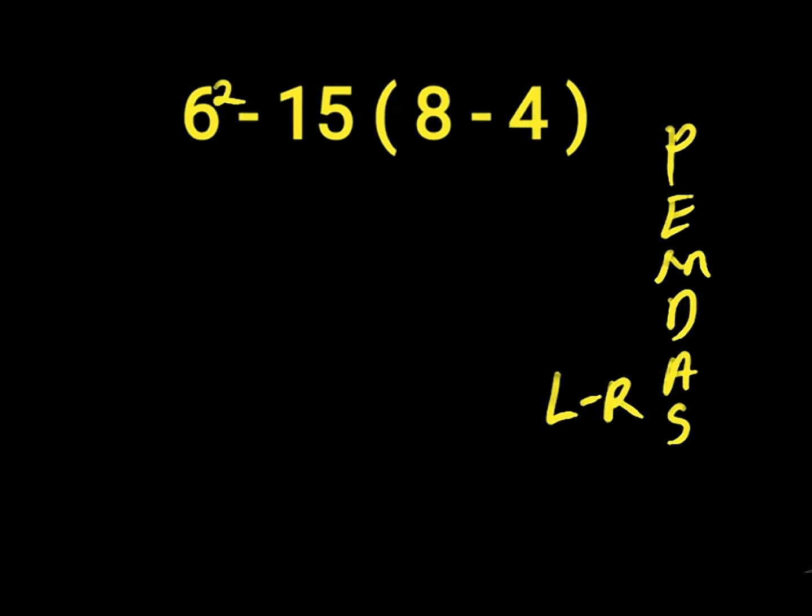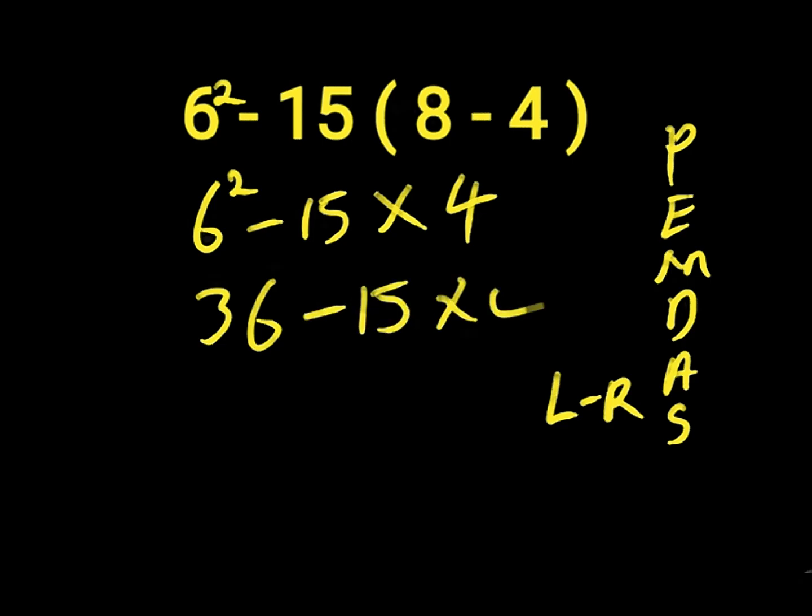First of all, we solve our parentheses, which is 8 minus 4. 8 minus 4 will give us 4. Then we bring down 6 to the power of 2 minus 15 times 4. Remember, if a number is close to a parentheses, there's a multiplication sign in between. 6 to the power of 2 equals 6 times 6. 6 times 6 will give us 36.